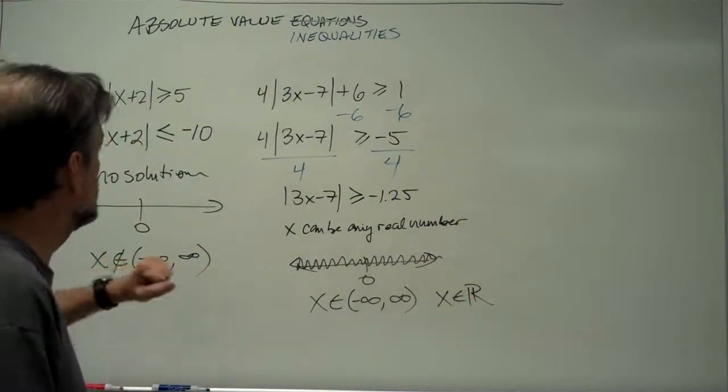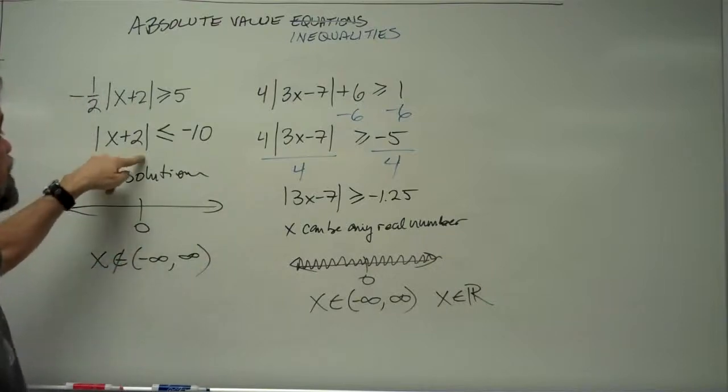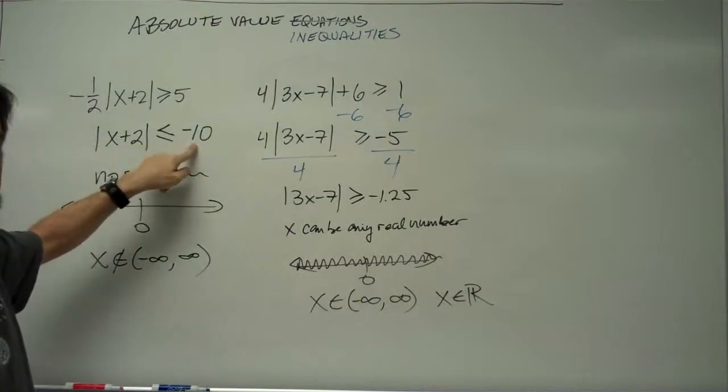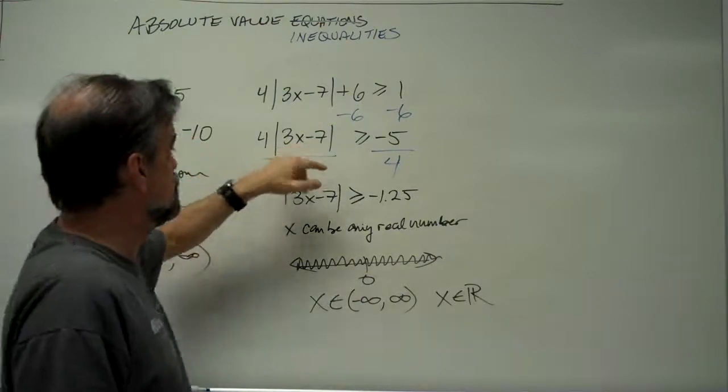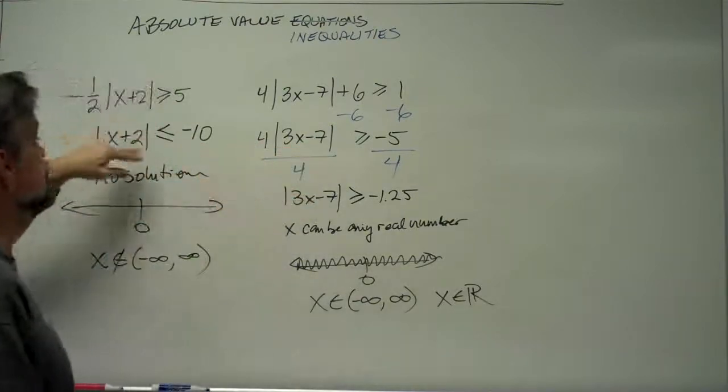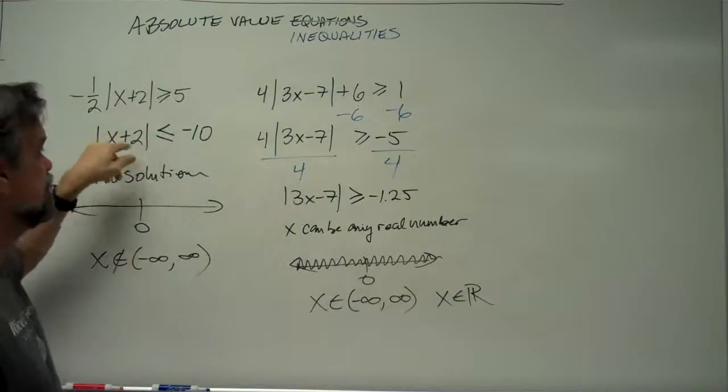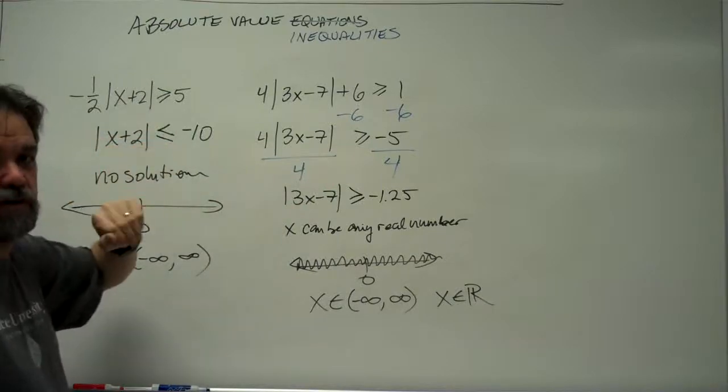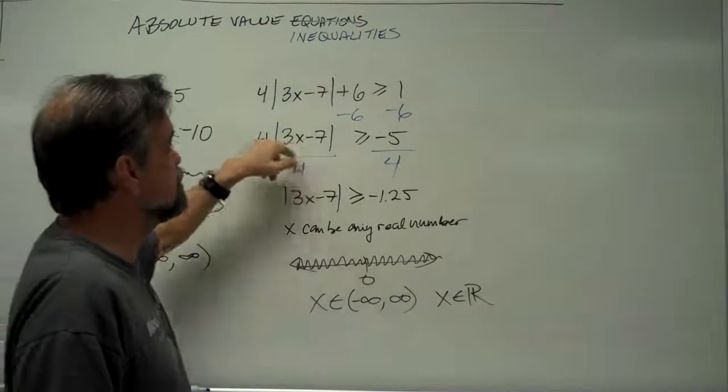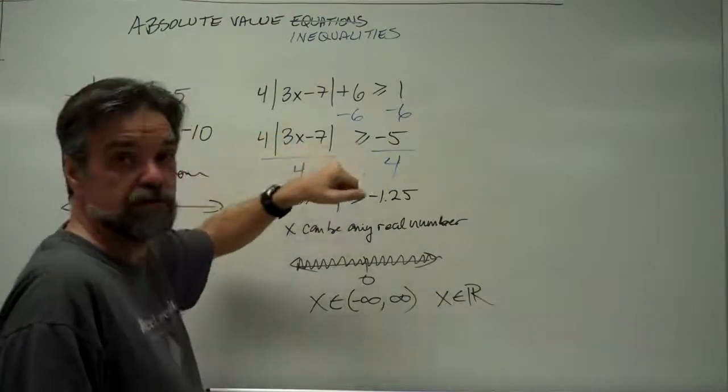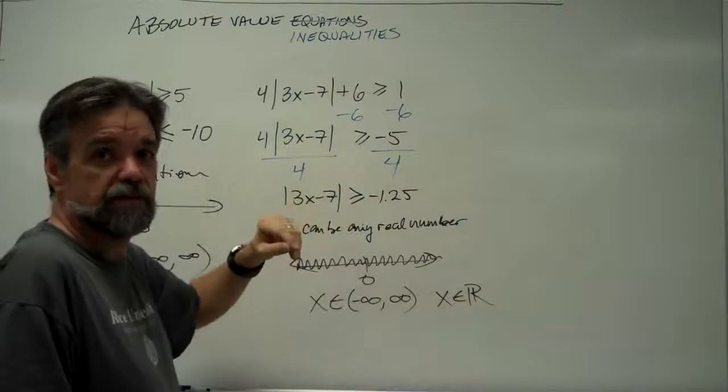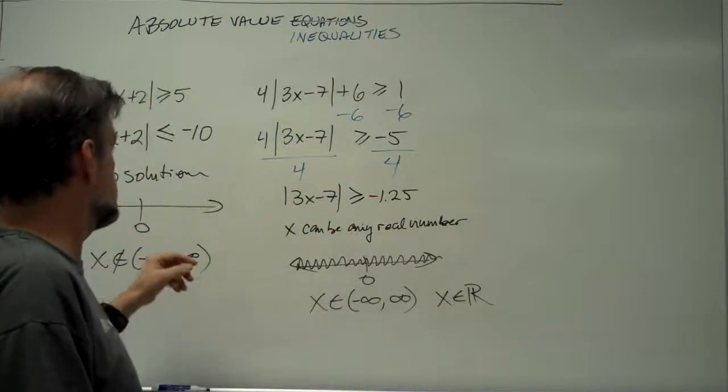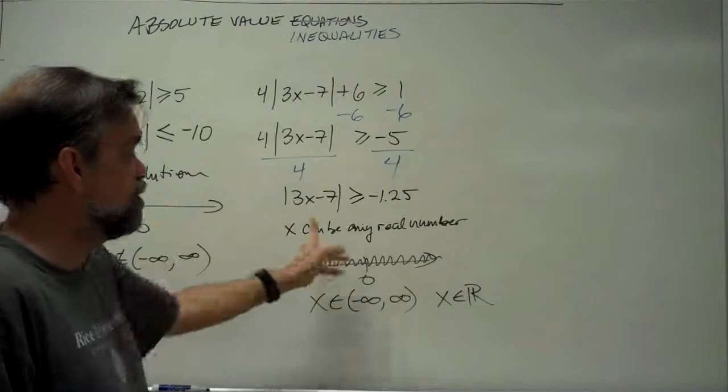So, to summarize, if you find yourself saying the absolute value of something has to be less than a negative number, no, it can't be. If you find yourself saying the absolute value of something is less than or equal to a negative number, no, it can't be that. If you're saying the absolute value of something has to be greater than or equal to a negative number, or greater than a negative number, yeah, it has to be. So, that's how you can get this answer of no solution or any real number.